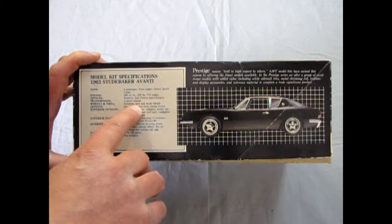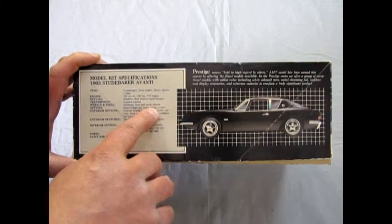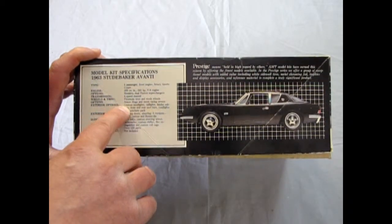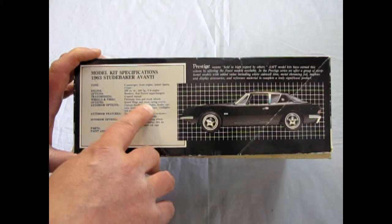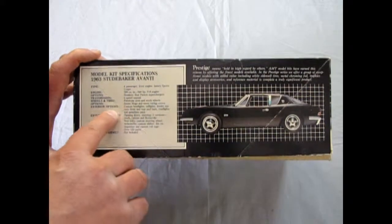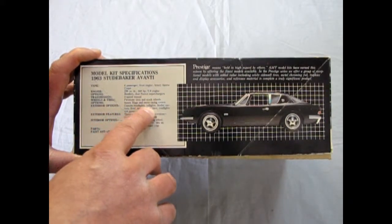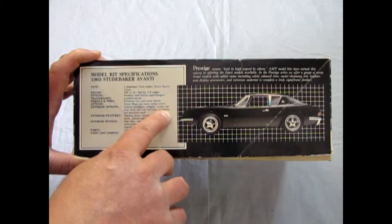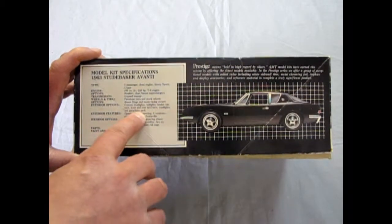The wheels and tires are Firestone tires and stock wheels. Options: Anson mags and moon racing covers. Exterior options: custom headlights, taillights, fenders, mirrors, front and rear nerf bars, road lights, and parachute pack.